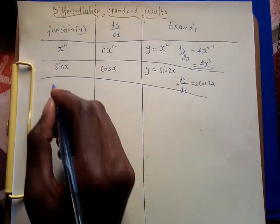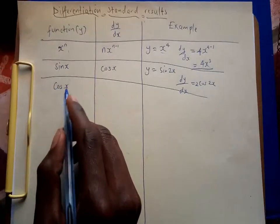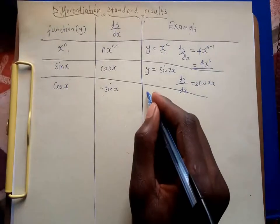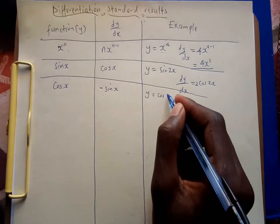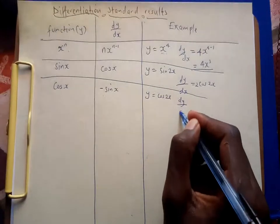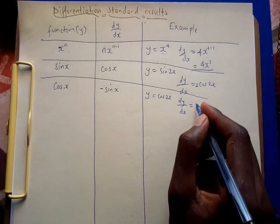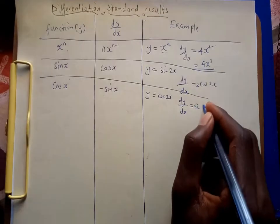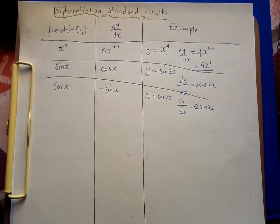Now for cos(x), the derivative of cos is negative sine, so it becomes -sin(x). For example, if you are given y = cos(2x), its derivative dy/dx: when we differentiate, the 2 comes in front, but cos becomes minus sine, giving -2sin(2x).